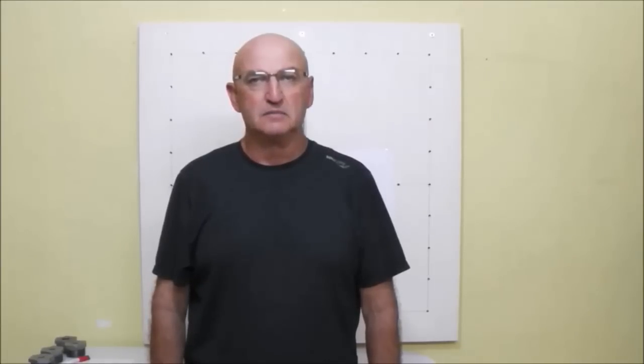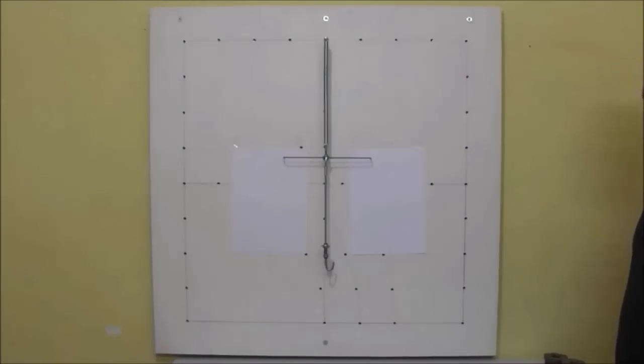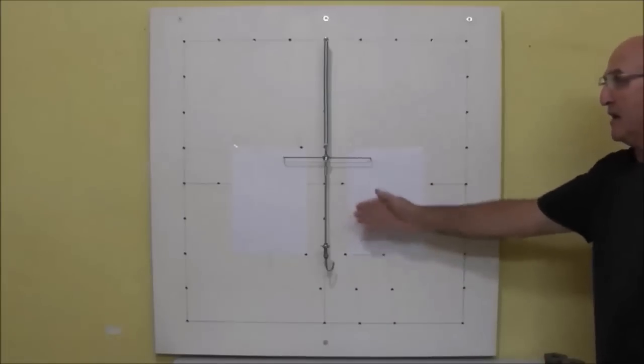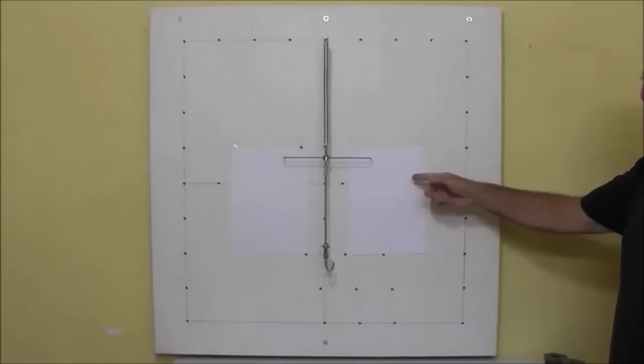In our first experiment, we are going to test the effect of the weight hanged on a coil spring on the extension of the spring. We have here a coil spring hanged on our demonstration board, a weight hanger, pointer, and a sheet of paper for taking readings.